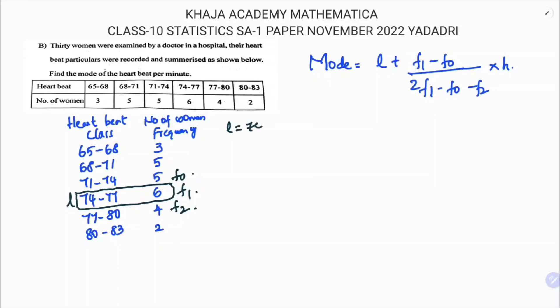l is 74, f0 is 5, f1 is 6, and f2 is 4. Now for class size, subtract from down to up, whether it is continuous or non-continuous: 71 minus 68 equals 3, or 83 minus 80 equals 3. So class size h is 3.